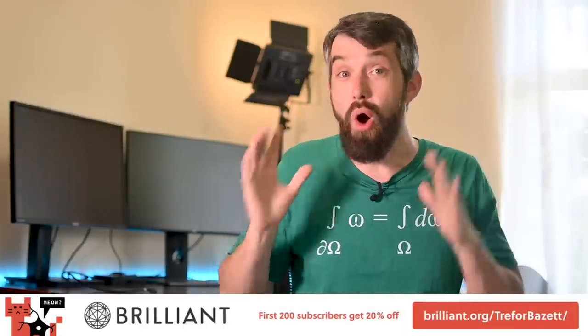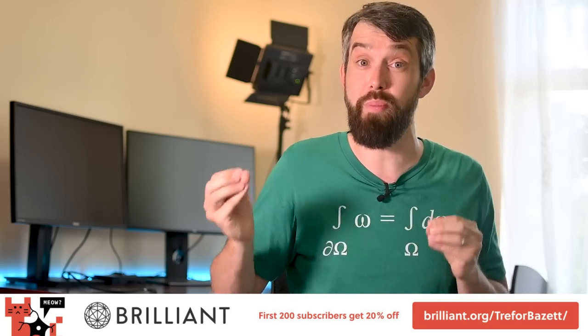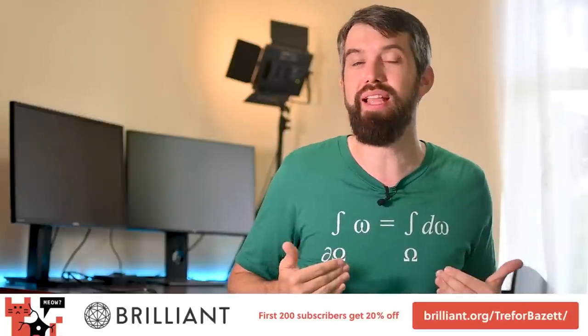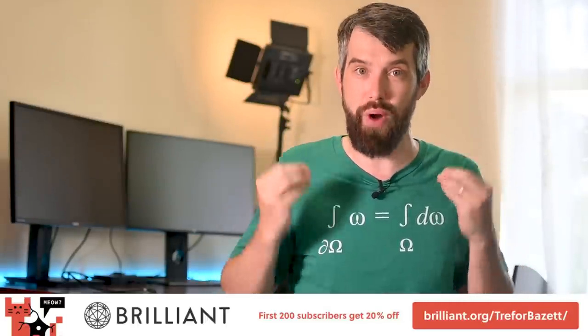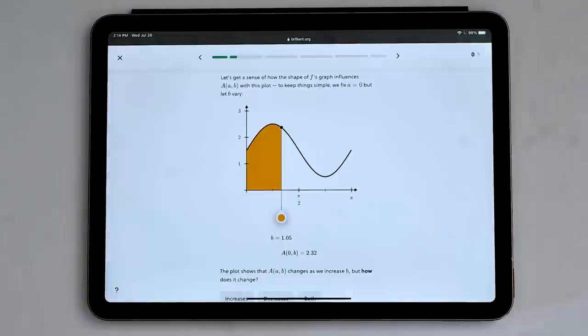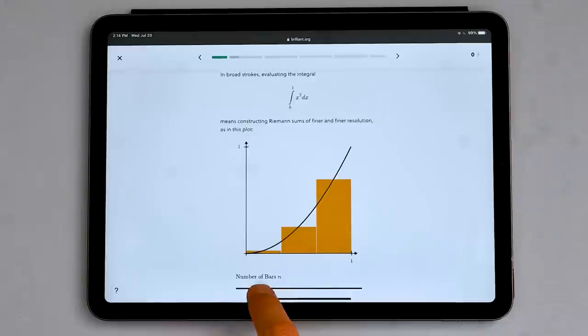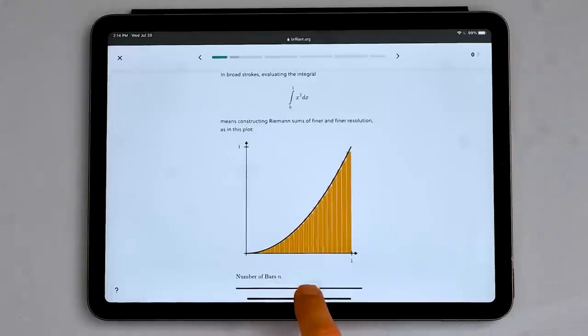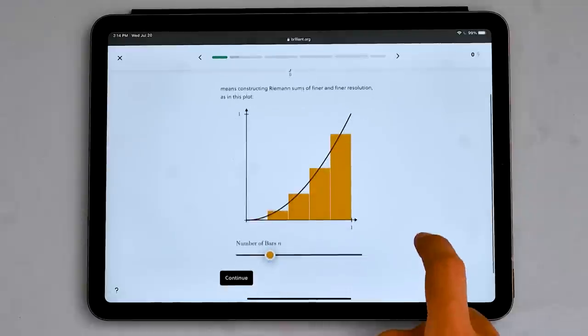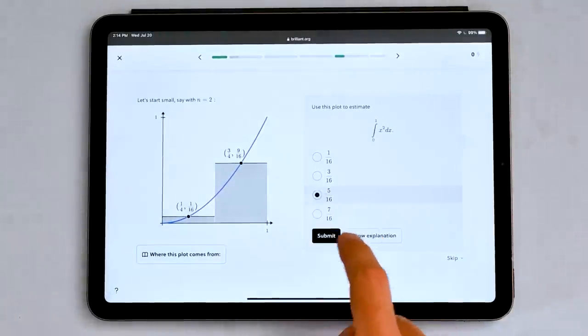Brilliant is a fantastic online learning platform so that you can learn STEM topics at your own pace. And what I really like about it is that it is delightfully interactive. When learning calculus, for instance, we can gain visual intuition about the relationship between the function and the area under the curve, or be able to see how increasing the number of rectangles in our approximation does a better and better job of computing out that area.